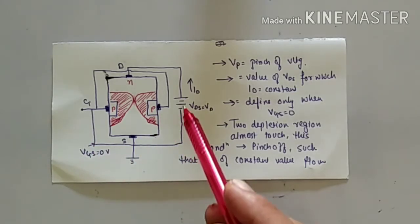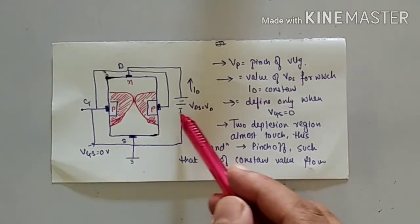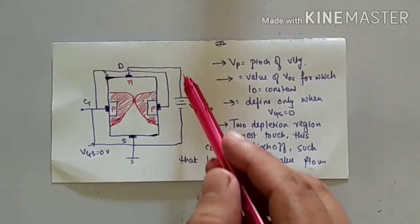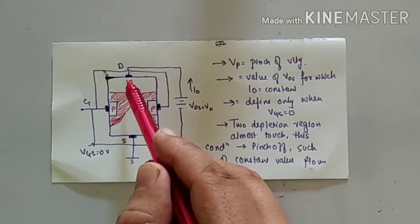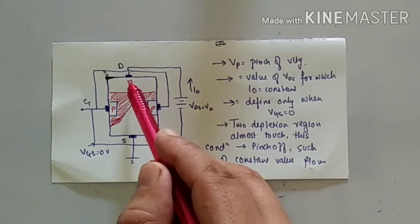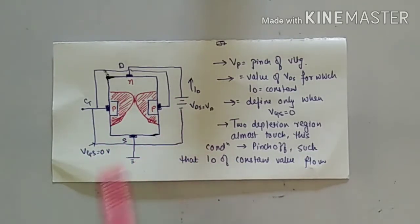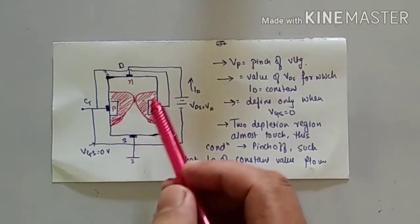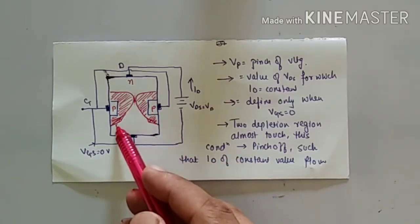Suppose we take an example: 10V supply is given. This positive supply of the battery will come to the N-type, so 10V will be coming inside here, and here it will be zero because it is a ground condition. You can see in the diagram there is a depletion region — where the depletion region is high on one side and low on the other.